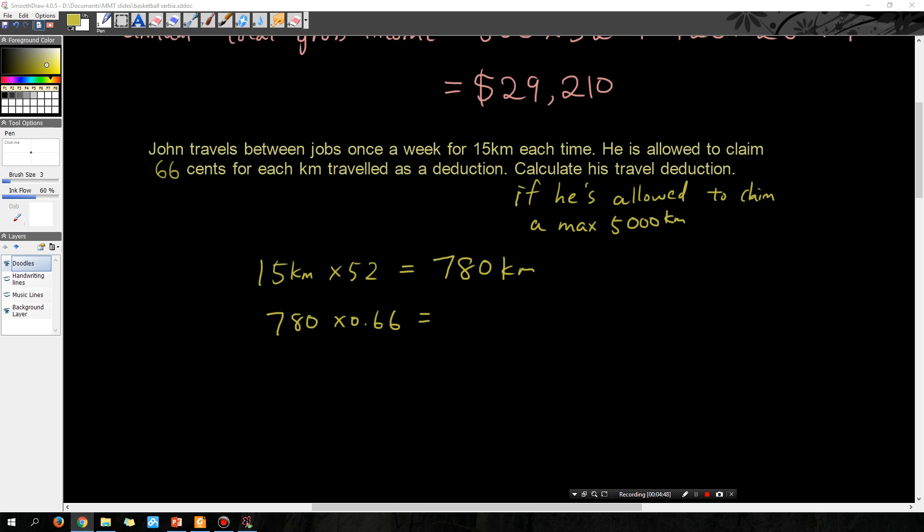So that is his travel deduction, which we're going to take out of his income in a second. Let's figure out if he has any other deductions.